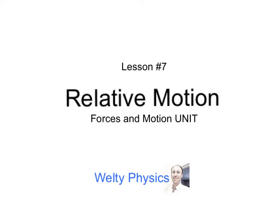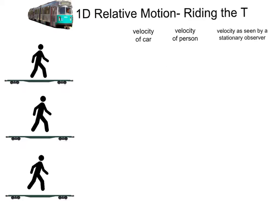Lesson number seven: relative motion. One-dimensional relative motion — riding the T.